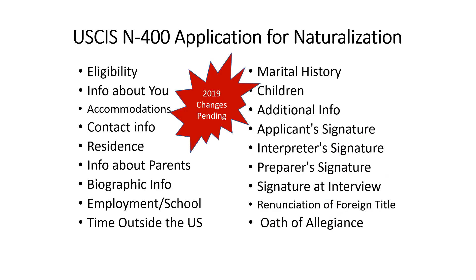I want to do a quick overview of the N-400 application for naturalization. It was supposed to be updated March 2019 and we're still waiting for those changes to come through. The first part is about eligibility — where you talk about how you are eligible or legally able to become a U.S. citizen. We also talk about information about you, such as your name and birth date.